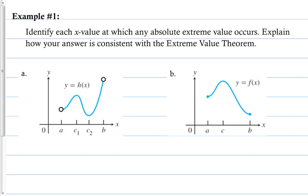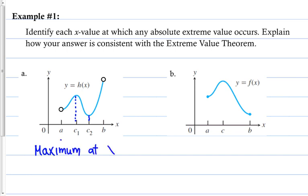For part A: looking at the graph, we have a maximum here and a minimum here, but there's also a maximum at the other end — however, those endpoints are open circles. The open circles mean those points are excluded. So what we have is a maximum at x = c₁ and a minimum at x = c₂.